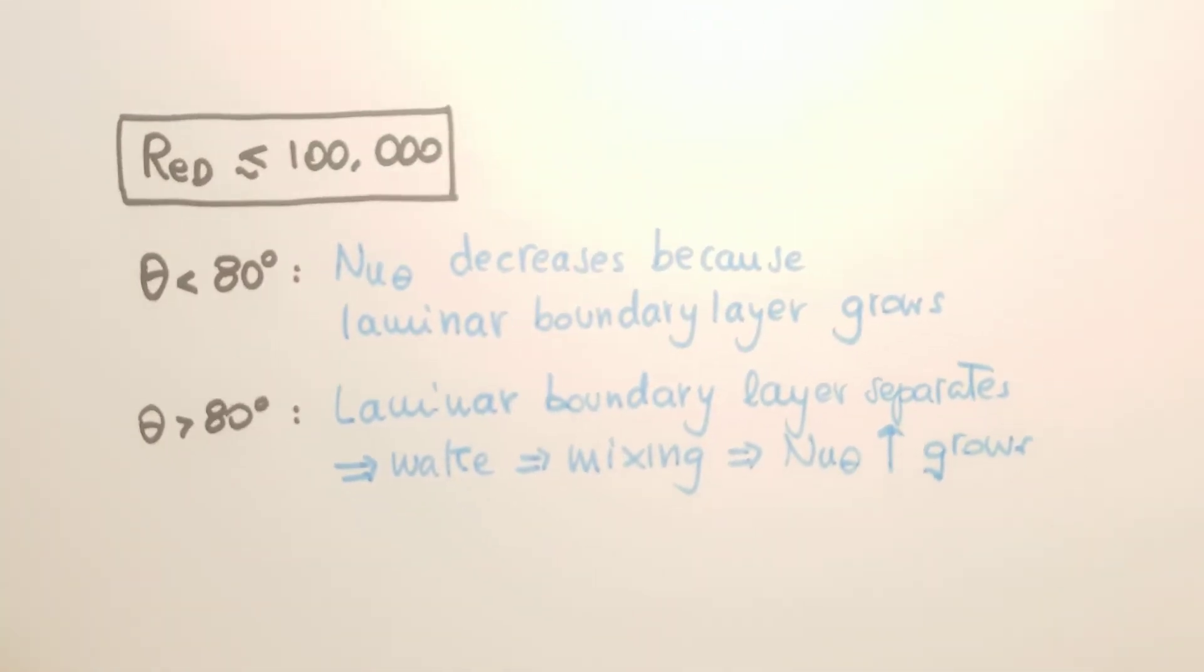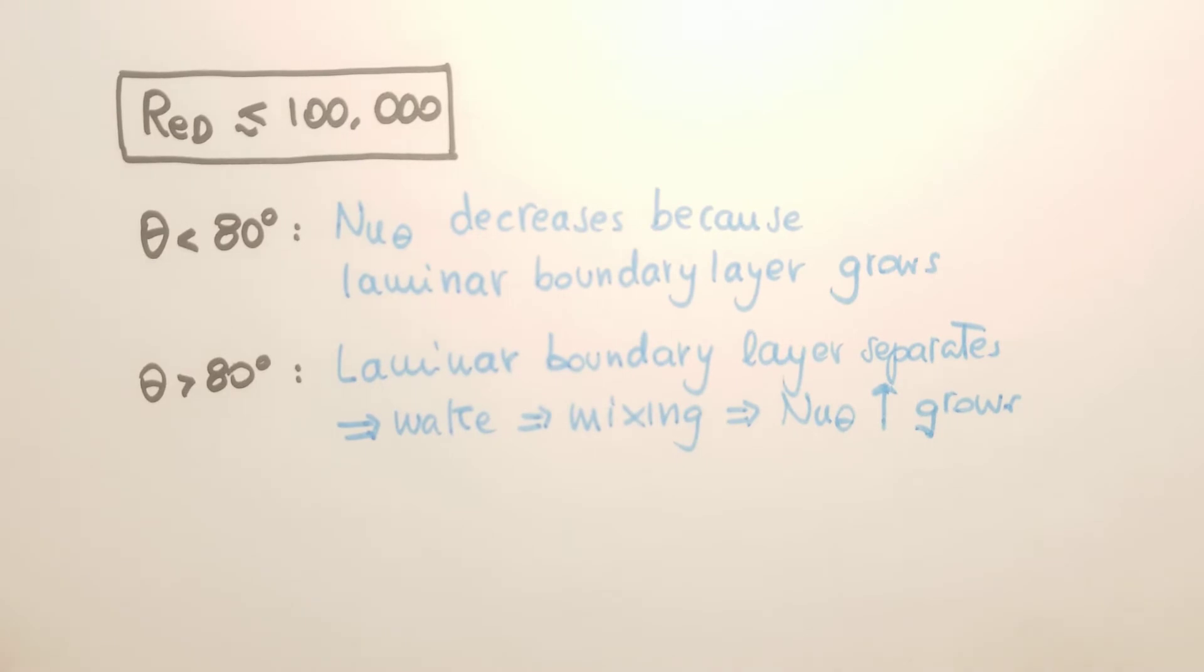So for Reynolds number smaller than about 100,000, when theta is smaller than about 80 degrees, the Nusselt number decreases as theta increases because the laminar boundary layer that grows over the sphere or cylinder grows.